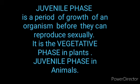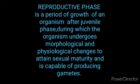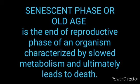In plants, the pre-maturity phase is called the vegetative phase. The second stage is the reproductive phase, which starts after the juvenile phase. This is a particular period of time that differs from individual to individual.